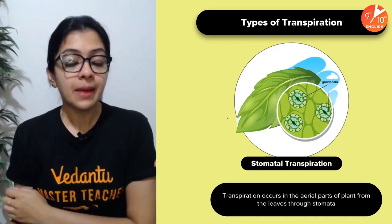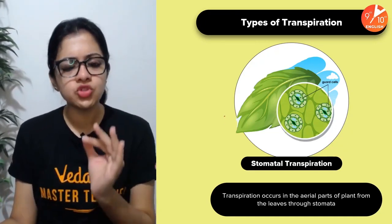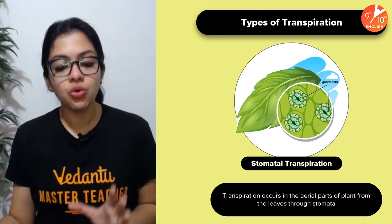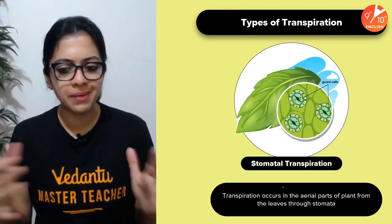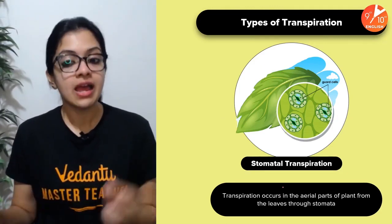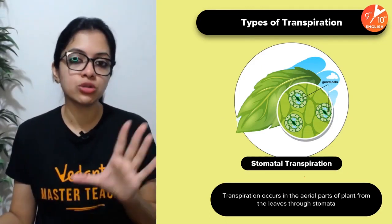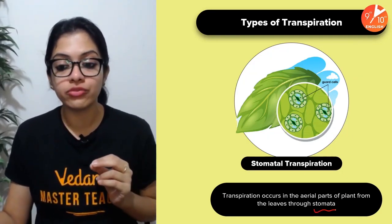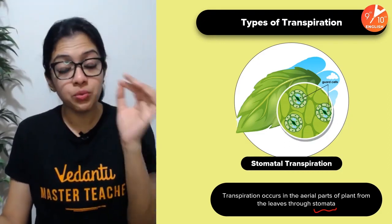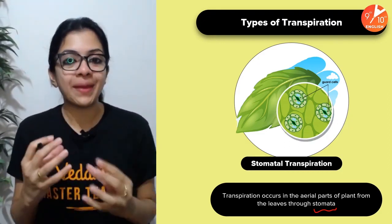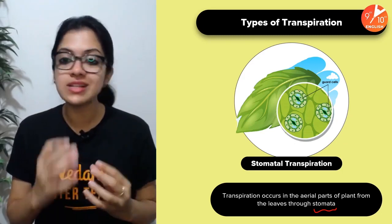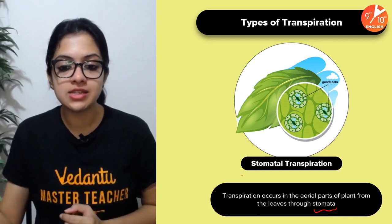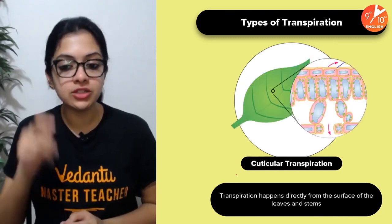Coming to the types of transpiration — the most common form is stomatal transpiration. Transpiration occurs in aerial parts, and a major portion occurs through the stomata of the leaves. Those tiny openings are guarded by a pair of bean-shaped cells called guard cells. This is what we call stomatal transpiration.